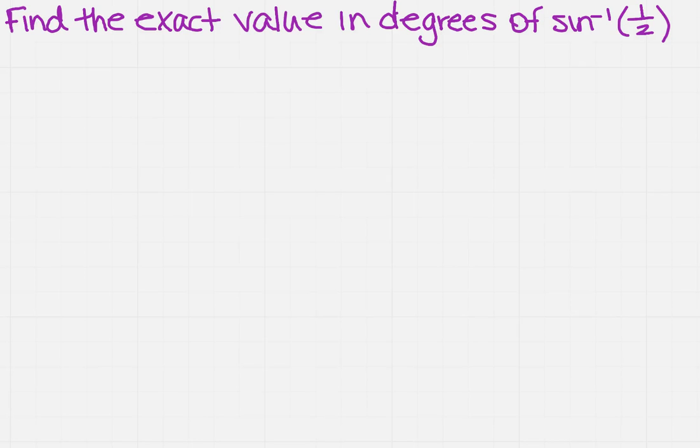I want to find the exact value in degrees of the inverse sine of 1 half. Now, how in the world am I going to do that?